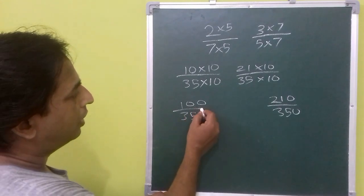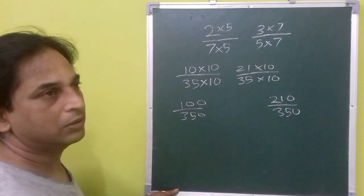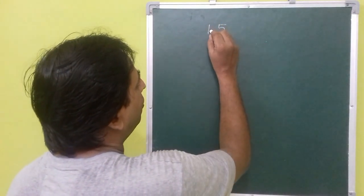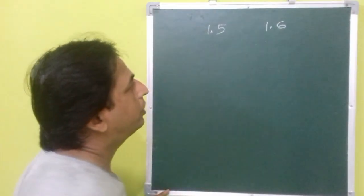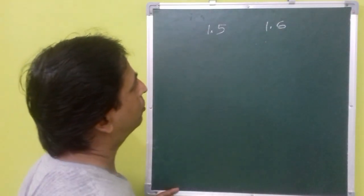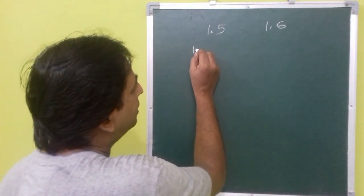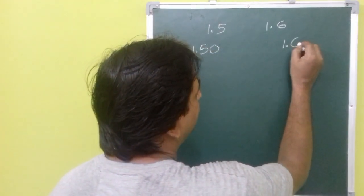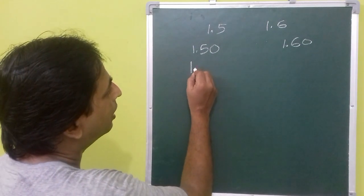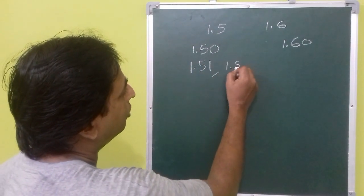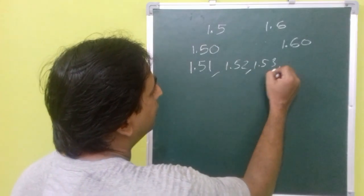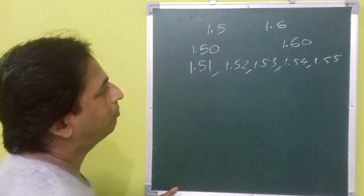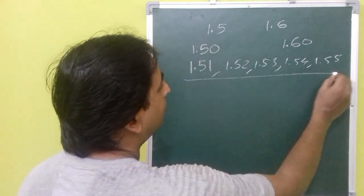Rational numbers can also be in decimal form. For example, find five rational numbers between 1.5 and 1.6. Write 1.5 as 1.50 and 1.6 as 1.60. Then you can find 1.51, 1.52, 1.53, 1.54, and 1.55 — five rational numbers between these two.